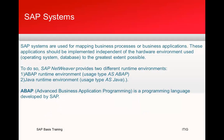SAP systems are used for mapping business processes of business applications. These applications should be implemented independent of the hardware environment used — that is, the operating system and database — to the greatest extent possible. For example, you may have a Windows environment, a Linux environment, or a Unix environment running on IBM.